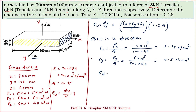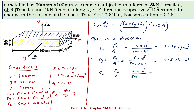Stress in z direction equals the load in z direction divided by the cross-sectional area resisting deformation. Load in z is 4 kilonewton, so 4×10³ newton. The resisting area is the top area, which is 300×100. So σz = 4×10³ / (300×100) = 0.133 newton per mm square.